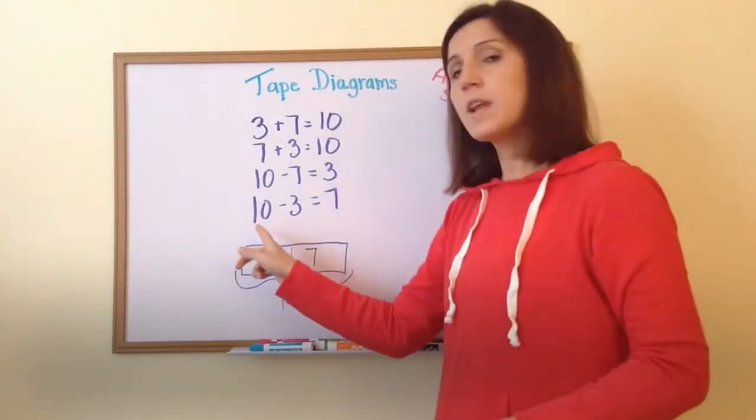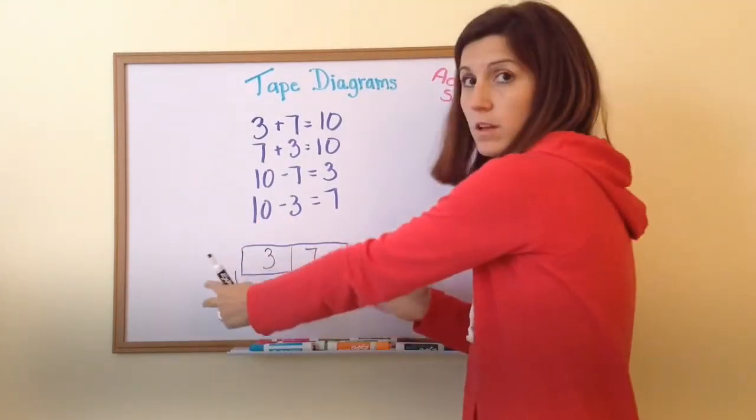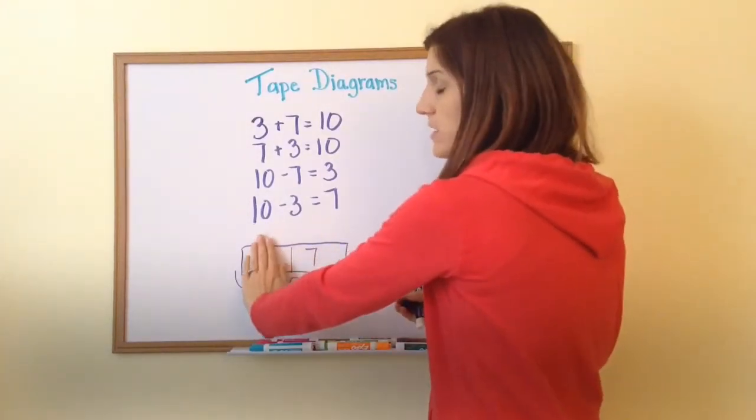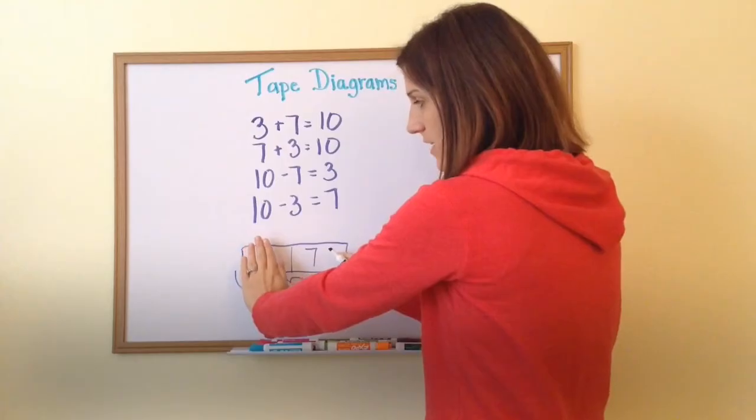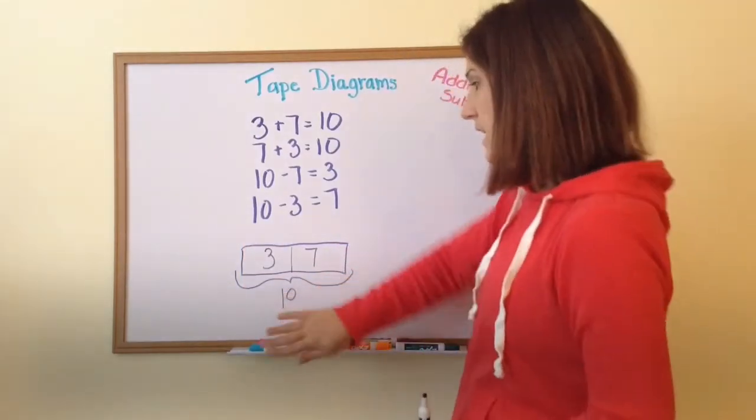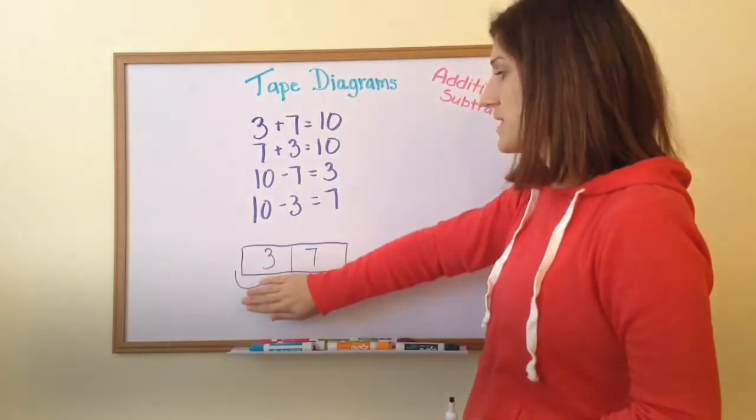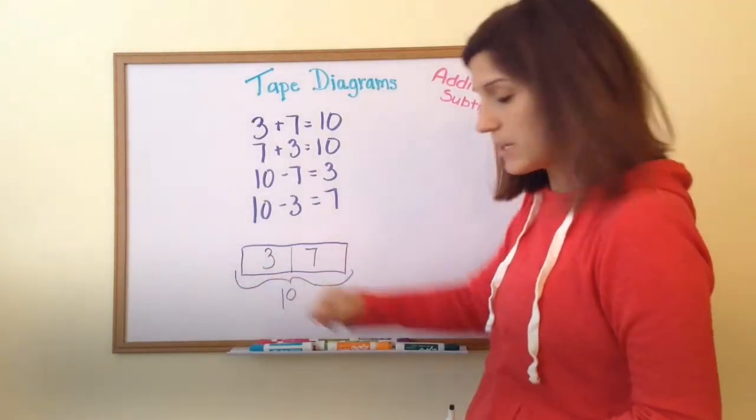So even when I'm subtracting, my whole is ten. It's all of it put together. I have ten and I can take away this three and I'm left with seven. Or I have ten and I take away seven and I'm left with three. Or I can put together the three and the seven to equal ten.